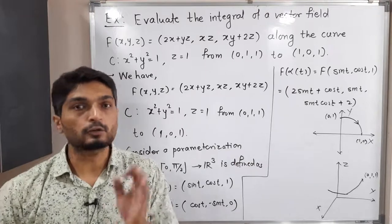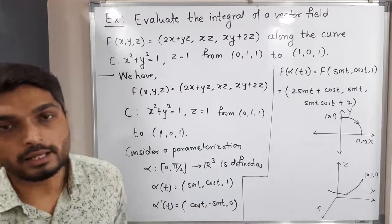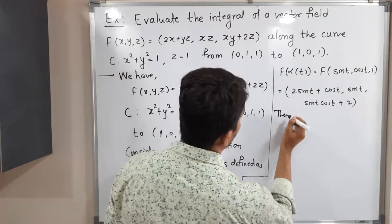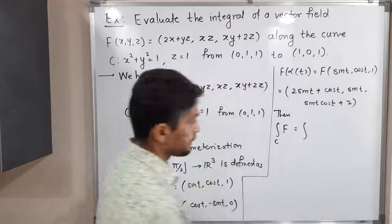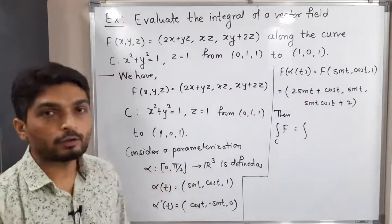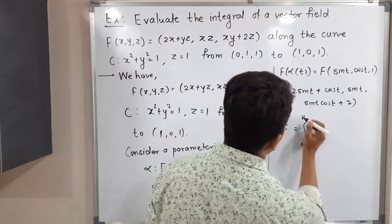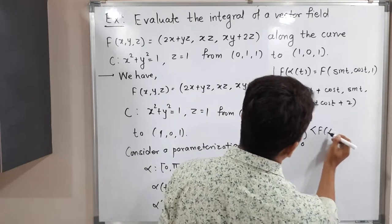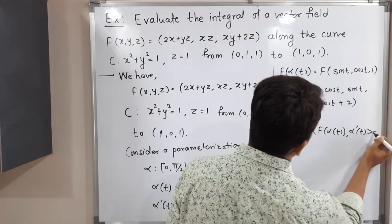Now we simply follow the definition of the line integral of a vector field. The line integral of f over C equals the integral from 0 to π/2 of the inner product of f(α(t)) and α'(t) dt, since the parameterization α is defined on [0, π/2].